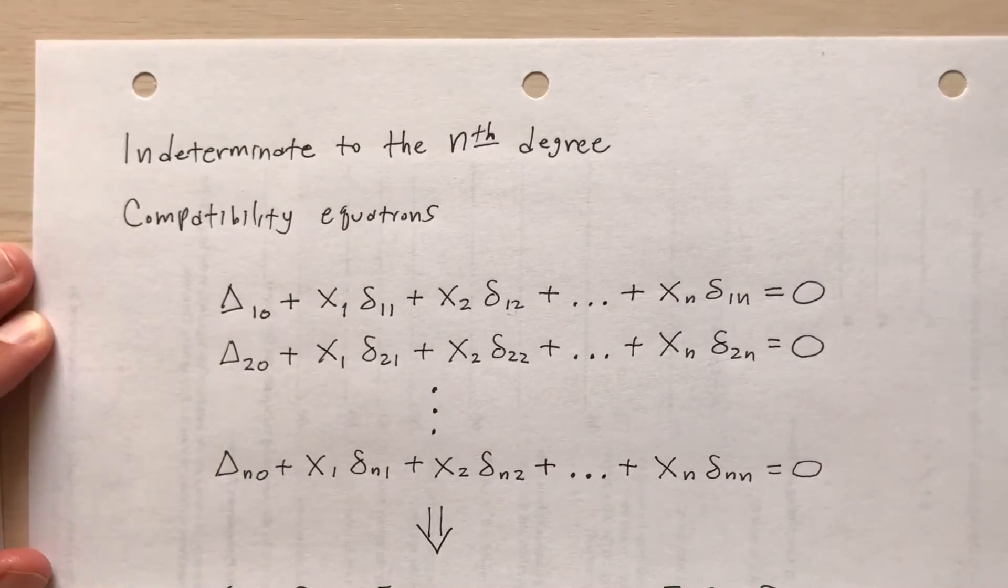The x's represent the redundance, or the unknown forces: x sub 1, x sub 2, all the way through to x sub n. The little deltas, delta sub 1,1, delta sub 1,2, etc., those represent the flexibility coefficients.